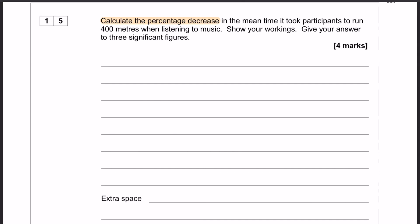All right, so question number 15 is a lovely maths question where we have to calculate the percentage decrease in the mean time it took participants to run 400 metres when listening to music. We have to show our workings and give our answer to three significant figures.